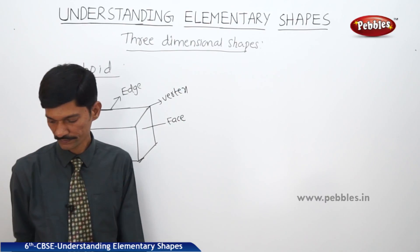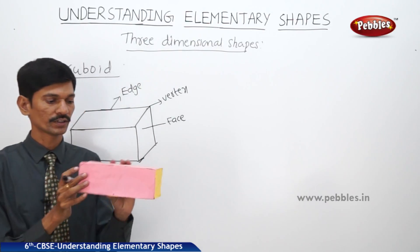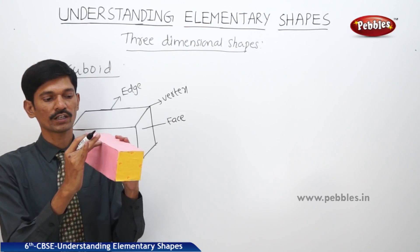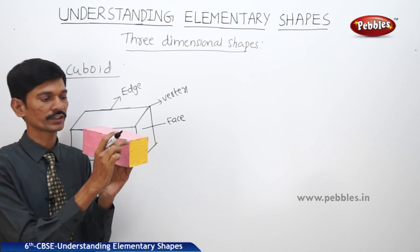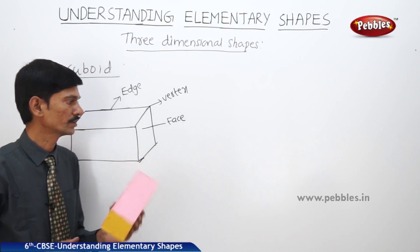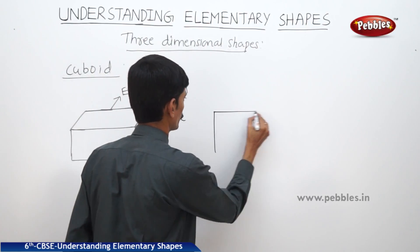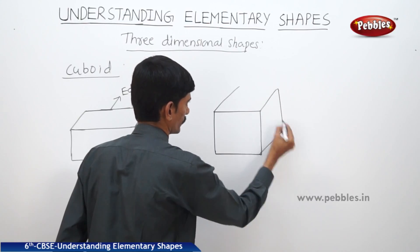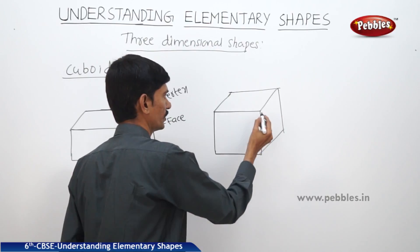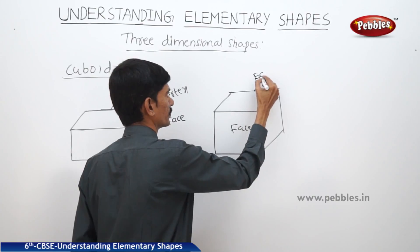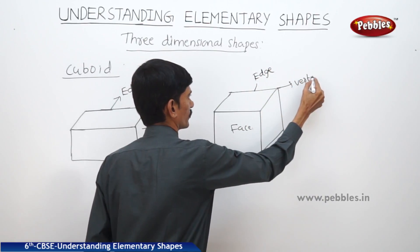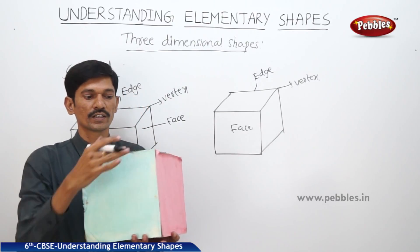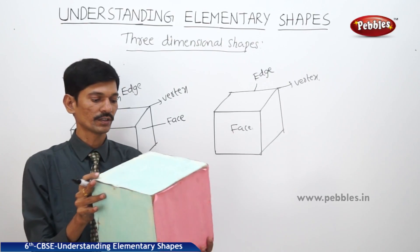Now let us see a cuboid. The lateral surfaces are called faces, and the two faces meet in a line, so this line is called the edge of the cuboid. A cube has all three dimensions the same — the length, breadth, and height are all equal.